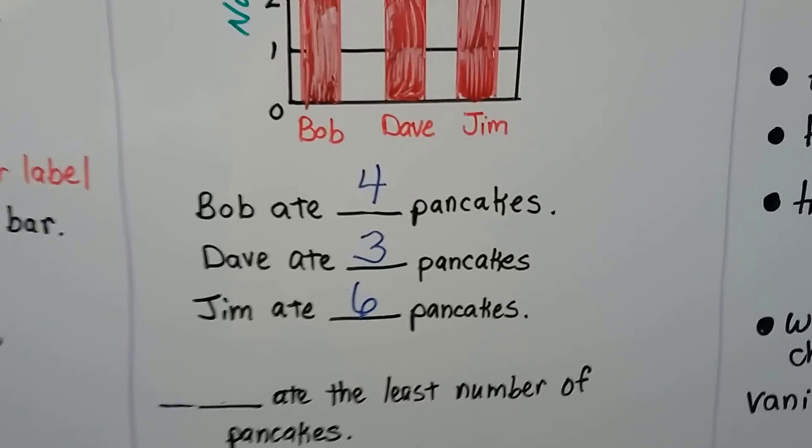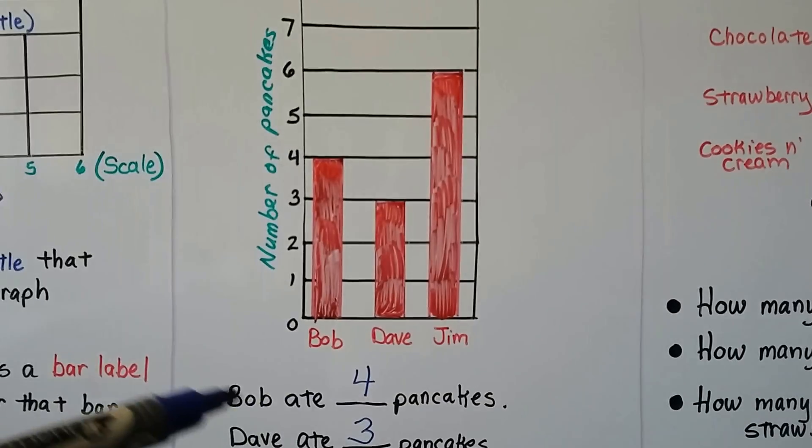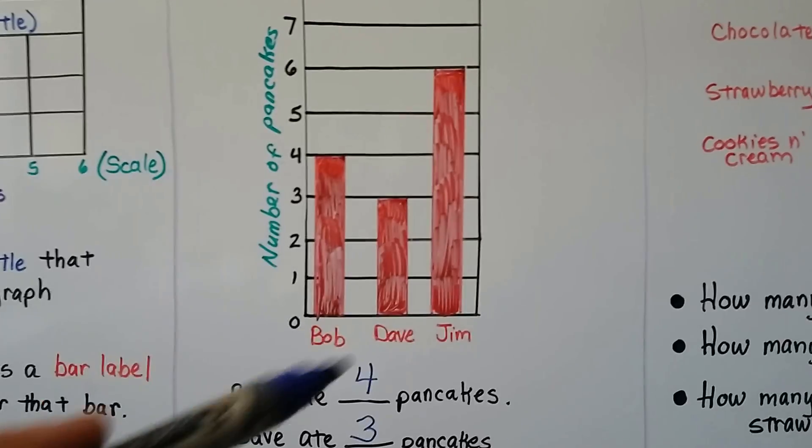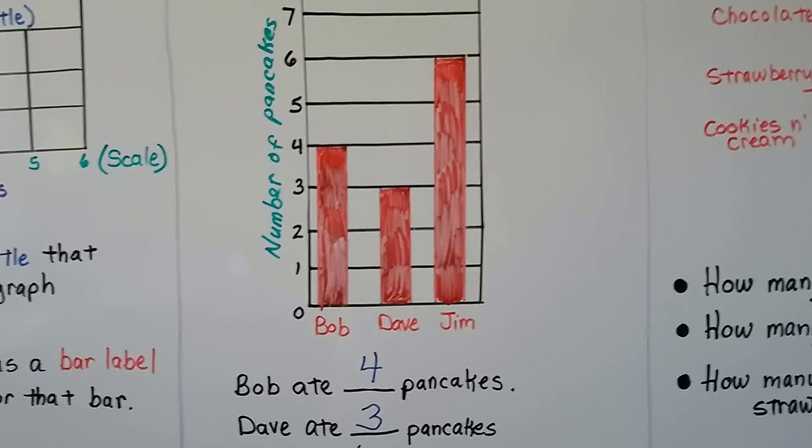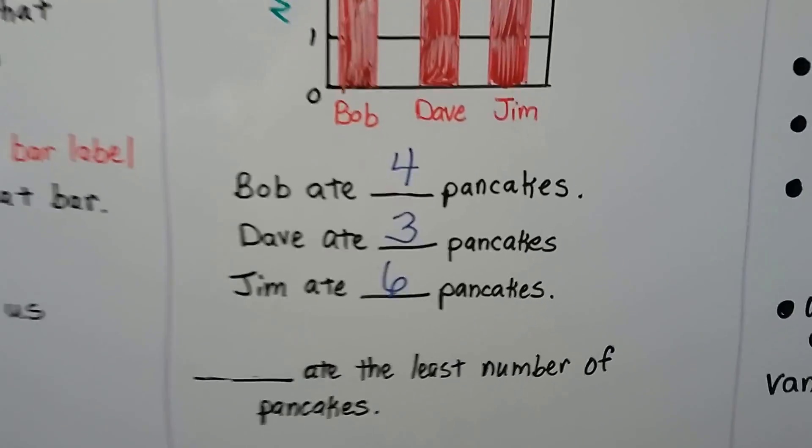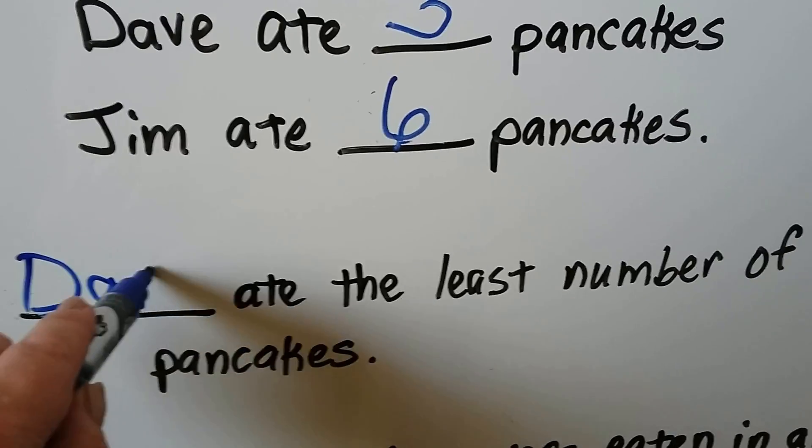Blank ate the least number of pancakes. We can easily look at the bar graph and see which has the shortest bar. Dave does, so he ate the least amount. He only ate three. So the answer is Dave. Dave ate the least number of pancakes.